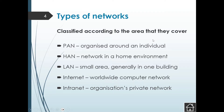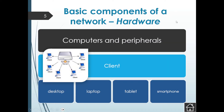We need to know the different types of networks, our definition of what a network is, and then look at some of the basic hardware components. When it comes to a network we talk about clients and servers. A server is a powerful computer that provides services to clients within the network — clients could be a desktop, laptop, tablet, or smartphone connecting to the main server.